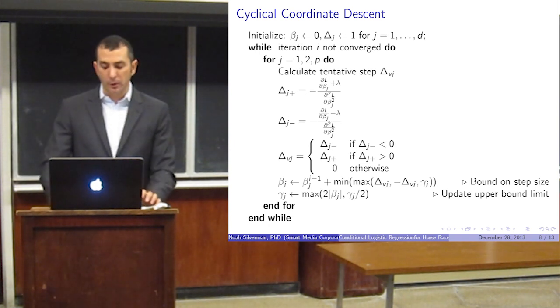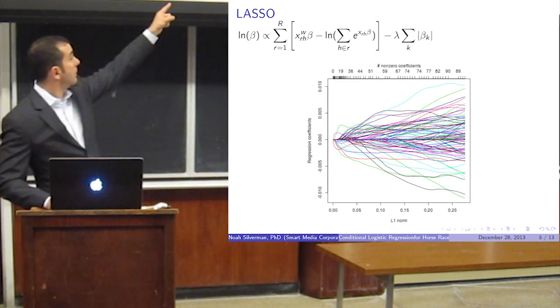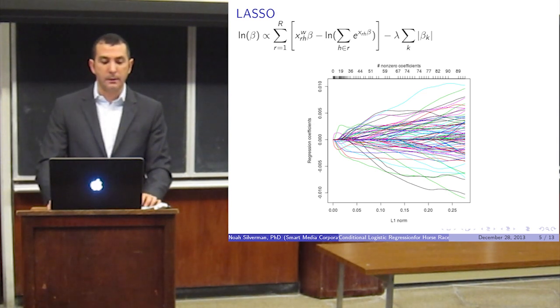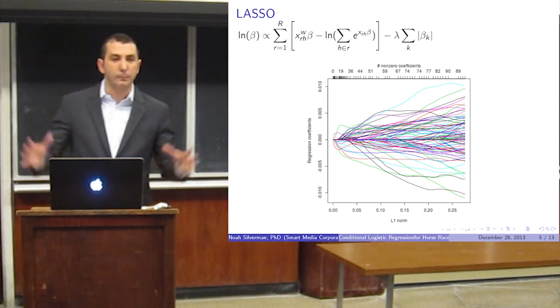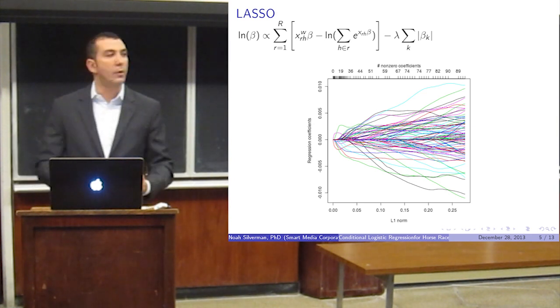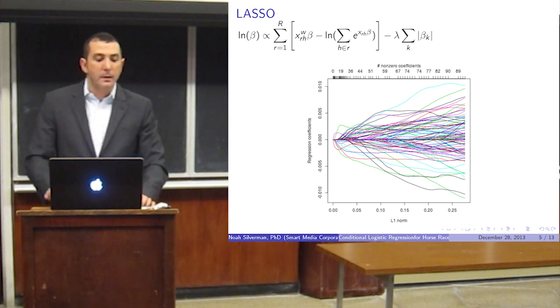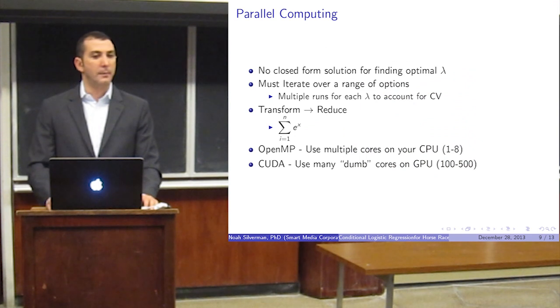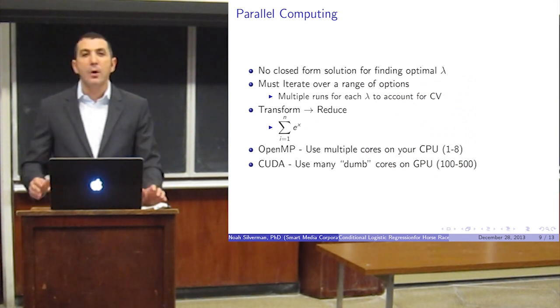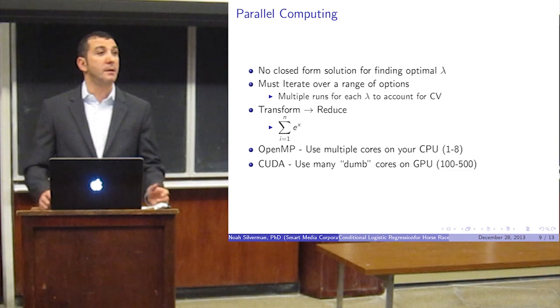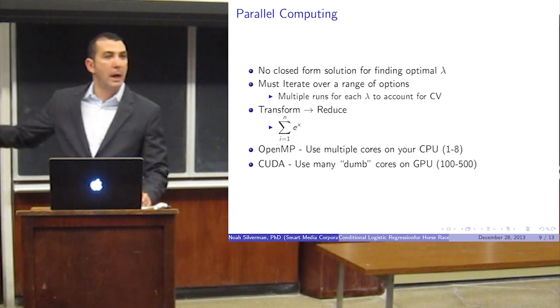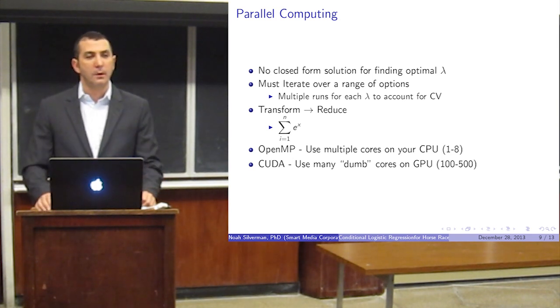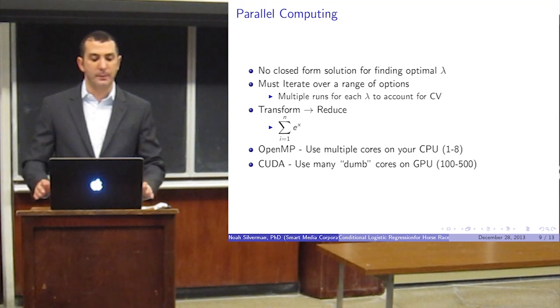Now, if you remember early on, we introduced lambda here, which is the weighting parameter on the coefficients. It's a penalty in a sense, so it will squeeze the insignificant coefficients closer to zero. Now, the problem with that is there's no closed-form solution for lambda. It can't be done. So now we have to do this whole coordinate descent thing, which can take a lot of time, for every single value of lambda we want to test. And really, you just have to do a grid search and iterate through lots of values of lambda to find the best one. So you're repeating this thing lots of times, and it's really, really slow.